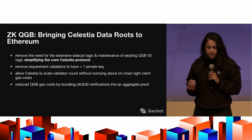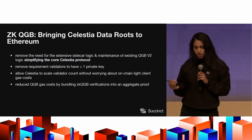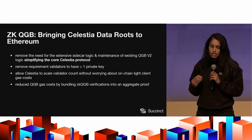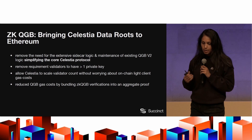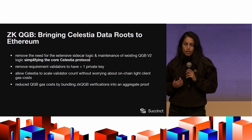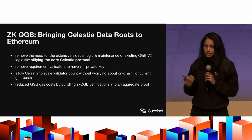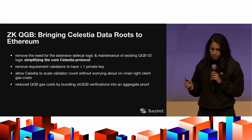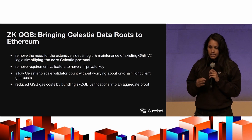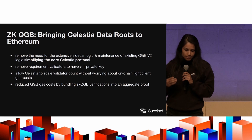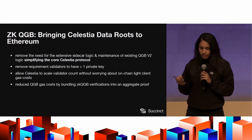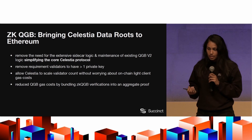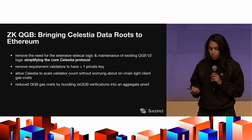There is an existing protocol to bring Celestia state to Ethereum called the QGB — the Quantum Gravity Bridge — and we are turning that into the ZKQGB. The ZKQGB has a lot of benefits. Right now, the QGB is a sidecar on the Celestia protocol, which values being minimal and only doing data availability. By having the ZKQGB, we can simplify the core Celestia protocol, take the existing Celestia validator signatures, verify them in a ZK SNARK, and move that out of the core protocol. Celestia can also scale their validator count without worrying about on-chain light client gas costs, and we can reduce gas costs by bundling all ZKQGB verifications together.